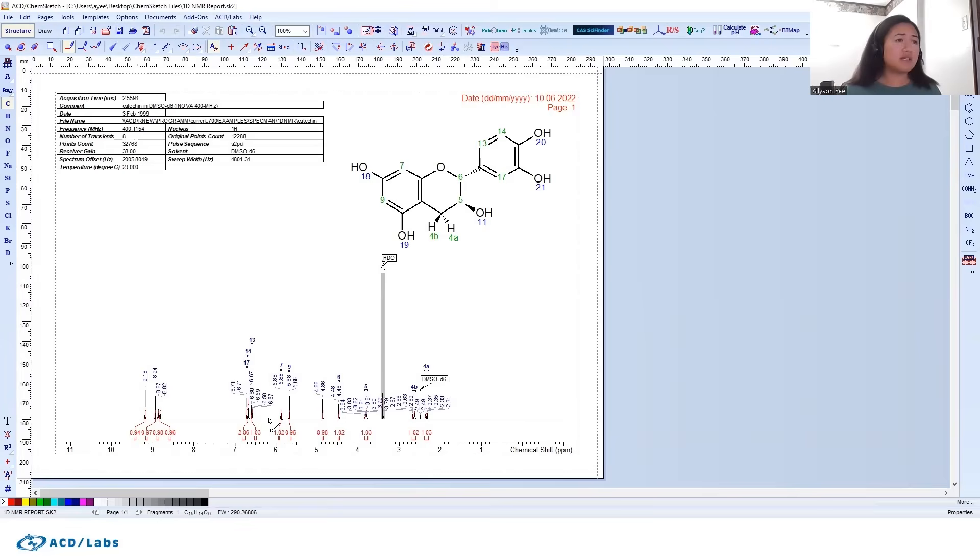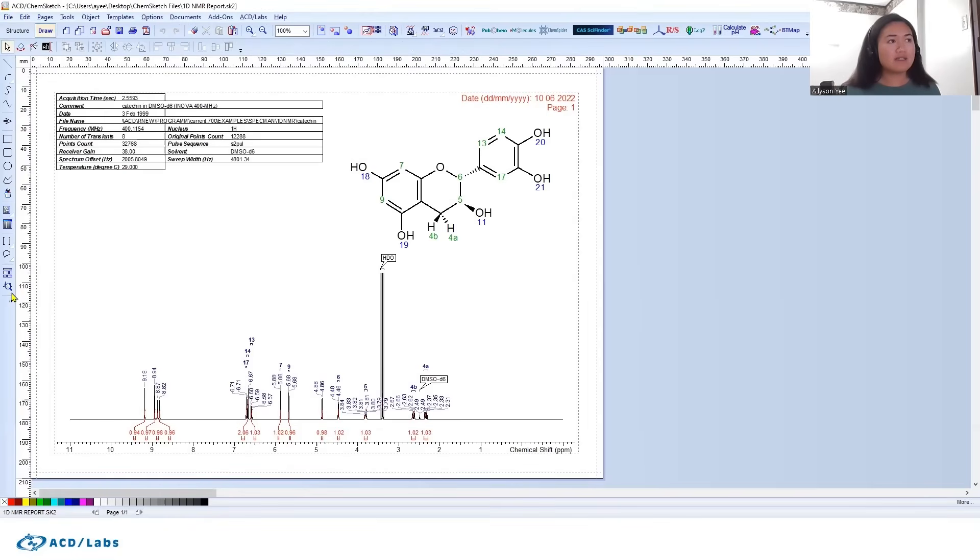I wanted to zoom in on these multiplets right over here. What I can do is in draw mode, I can click this button right here that has a magnifying glass - this is the Zoom Spectra button. So if I click that and I highlight here and I just zoom across this area like so, I'll let go and